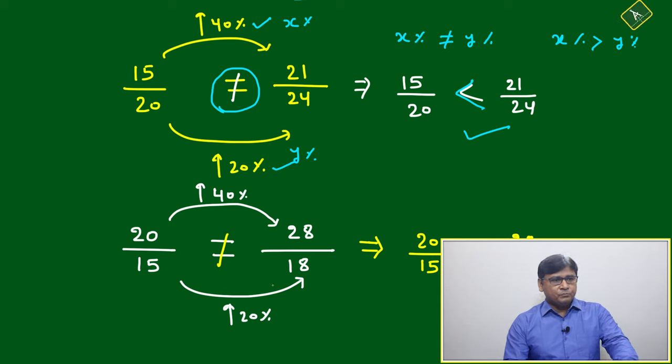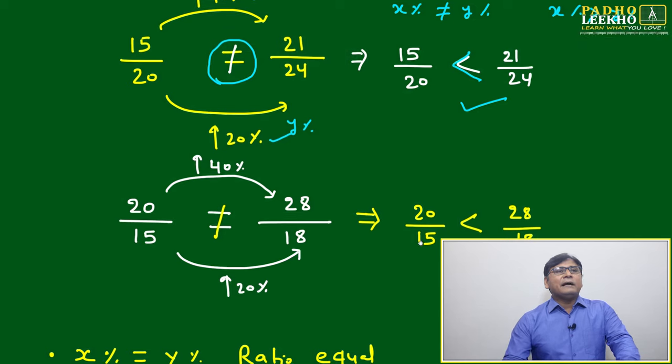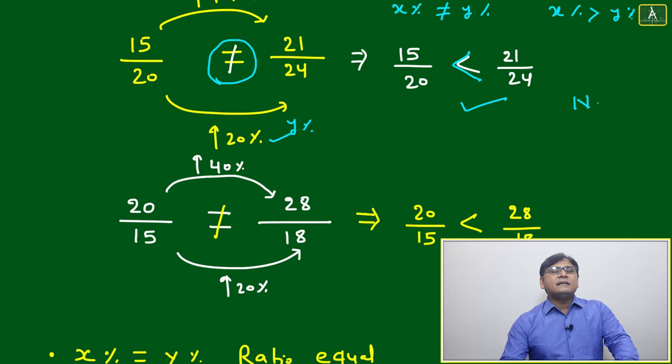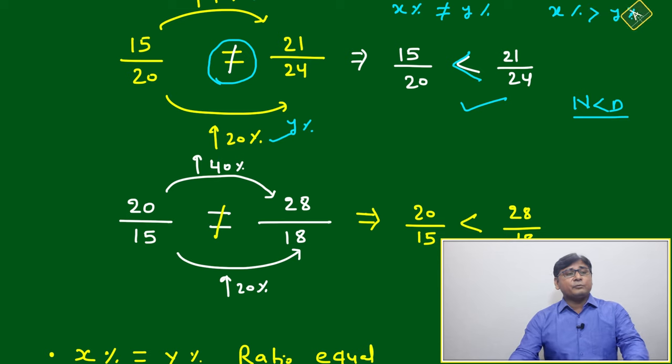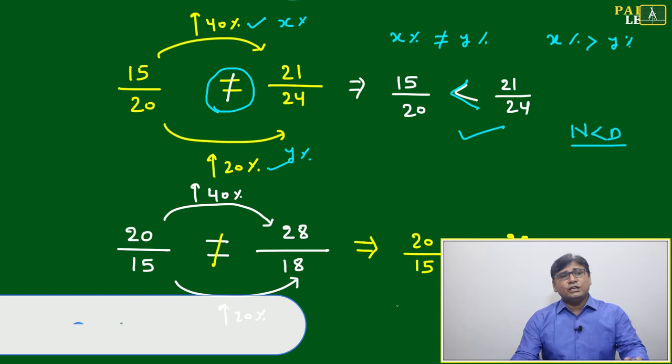Let's look at another scenario: 20 by 15. Here we have taken the case where n is less than d. Whenever you're applying any property for ratios, always be careful to apply it for both cases: n is less than d or n is greater than d.